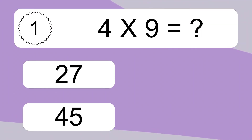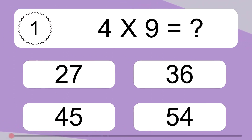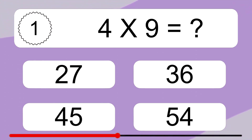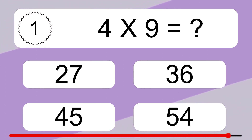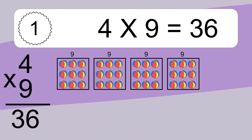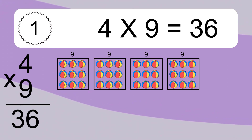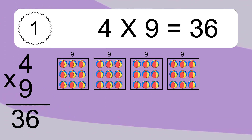4 times 9 equals what? 4 times 9 equals 36. We have 4 boxes, and each box has 9 colorful balls inside. If you count all the balls in all the boxes together, you will have 4 times 9 balls. This equals 36 balls.